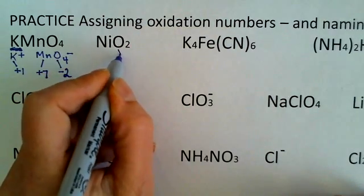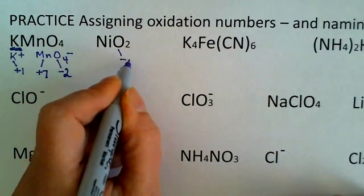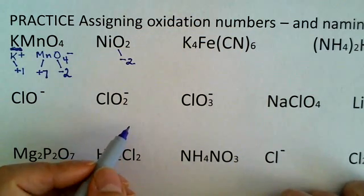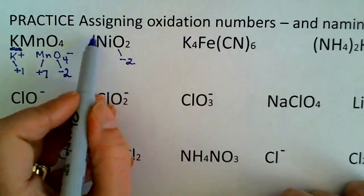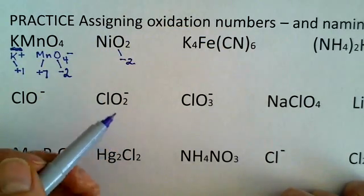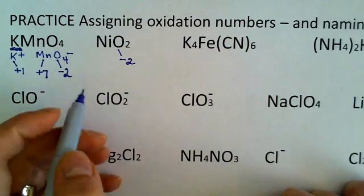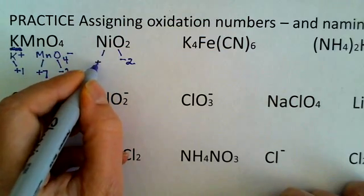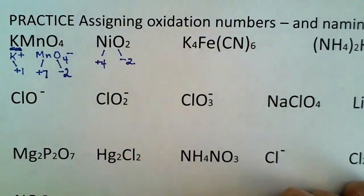Each oxygen has an oxidation number of minus 2. Manganese has plus 7, and the potassium has an oxidation number or oxidation state of plus 1. In the next one, I have nickel oxide, and the oxygen is minus 2 oxidation state again. I have two of them. The sum of the oxidation numbers has to equal the charge on my molecular compound, which here is zero. Two times a minus 2 is a minus 4, so this has to be a plus 4 to balance that.